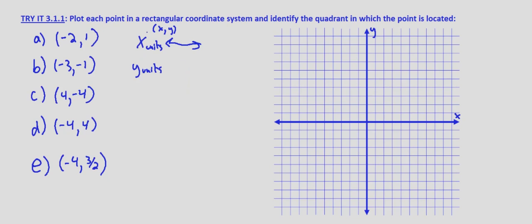Our first point is negative 2, 1. That means we go 2 units to the left and 1 unit up. If you don't have a scale on your graph, typically you just assume that it's 1. I'm going to go ahead and make each 2 units equal to 1.